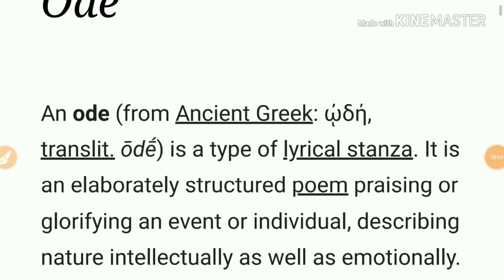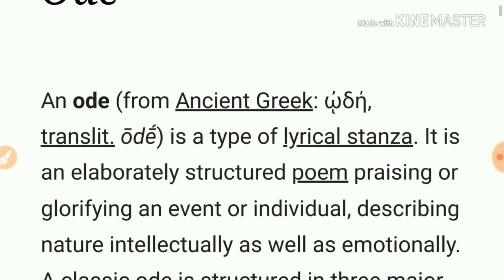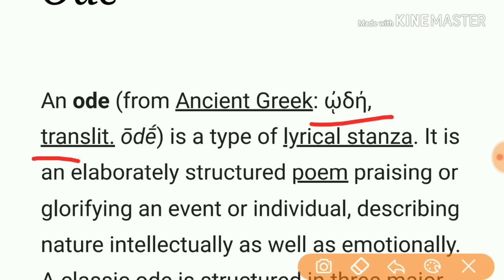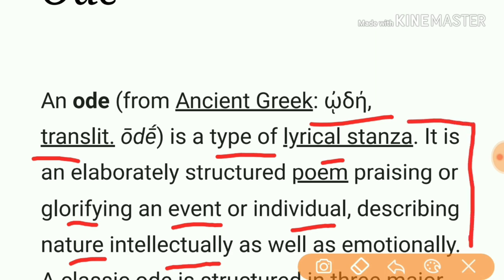An ode is a type of lyrical stanza. We will be collecting some keywords so that we can form a definition on our own. It is a lyrical stanza — an elaborately structured poem praising or glorifying an event or individual, describing nature intellectually as well as emotionally. Till here you can have your definition.